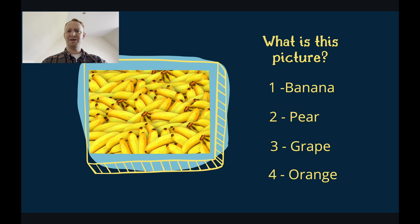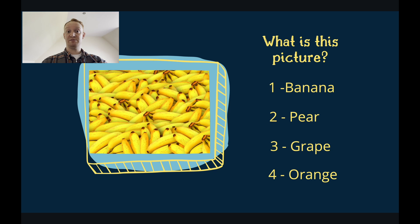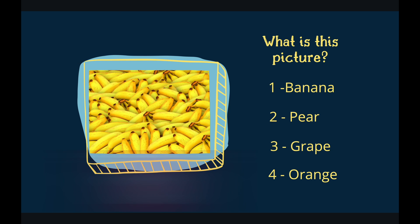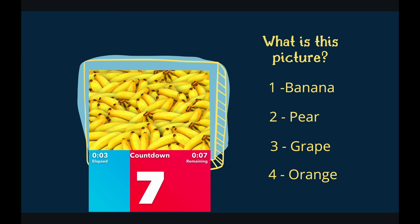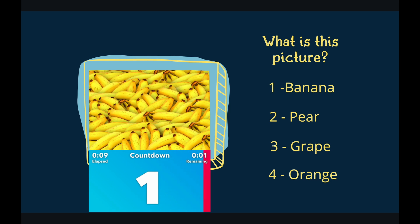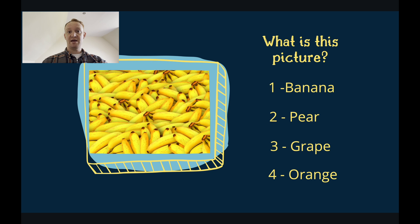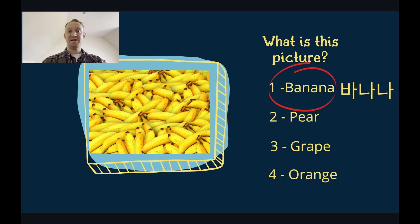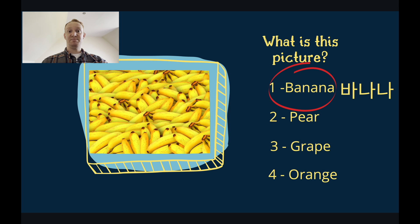What is this a picture of? Is it bananas? Is it pears? Is it grapes? Or is it oranges? You have 10 seconds to answer. It is bananas. This picture shows many bananas. These bananas are yellow. Bananas are very tasty.